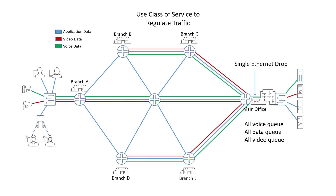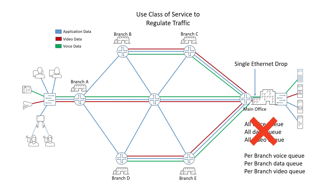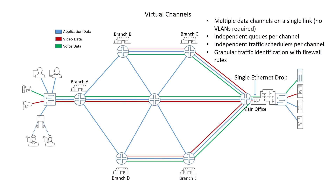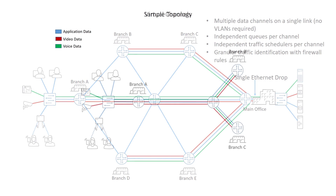All of these limitations and restrictions are overcome by using virtual channels. Virtual channels allow you to break a single link into multiple channels, much like a circuit-based network, and assign traffic to each channel according to traffic properties by using a simple firewall filter. In this way, each destination can be assigned its own set of queues and schedulers, but share a multi-access link with other channels.